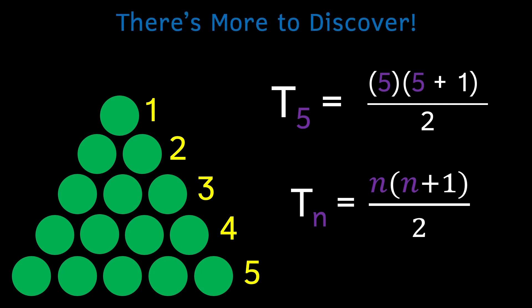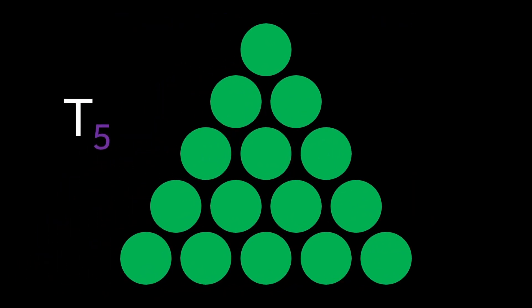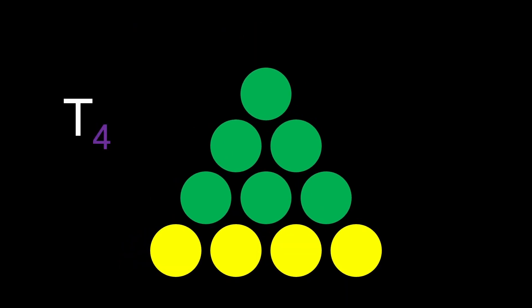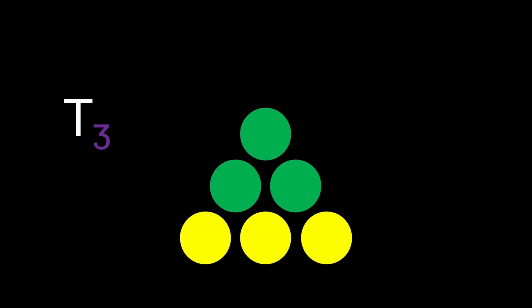But there's another set of patterns within these triangles I want to talk about to connect them back to factorials. As I mentioned before, we know that a triangle with five rows will have five dots on the bottom row, but if we take away that bottom row, we get a triangle with four rows where the bottom row has four dots. This process can be repeated until we get to the top of the triangle.